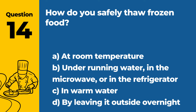Question 14. How do you safely thaw frozen food? a. At room temperature. b. Under running water, in the microwave, or in the refrigerator. c. In warm water. d. By leaving it outside overnight. Answer b. Under running water, in the microwave, or in the refrigerator. Safe methods to thaw frozen food include under running water, in the microwave, or in the refrigerator.